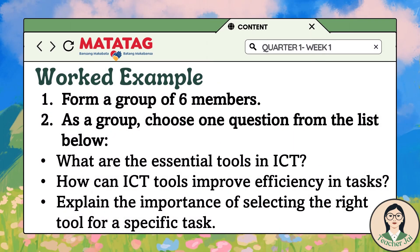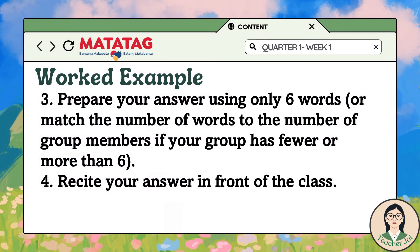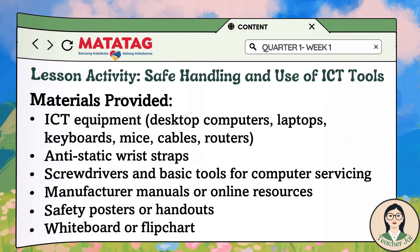Worked example: group the learners by 6, let them pick an item below, and answer the selected question by reciting in front, using only 6 words or however many are in the group. 1. What are the essential tools in ICT? 2. How can ICT tools improve efficiency in tasks? 3. Explain the importance of selecting the right tool for a specific task.